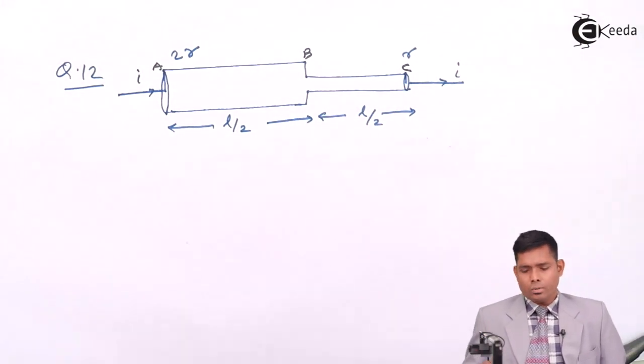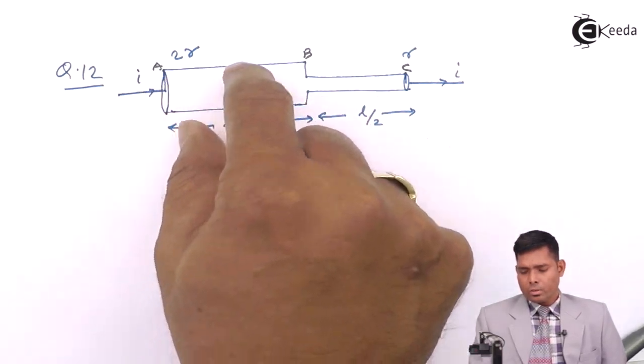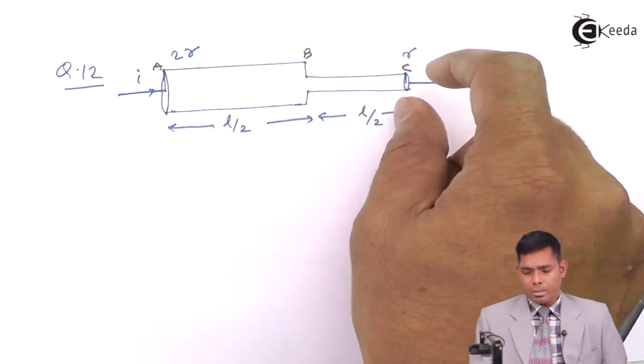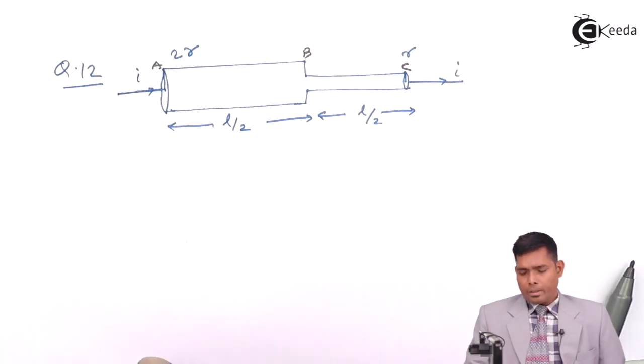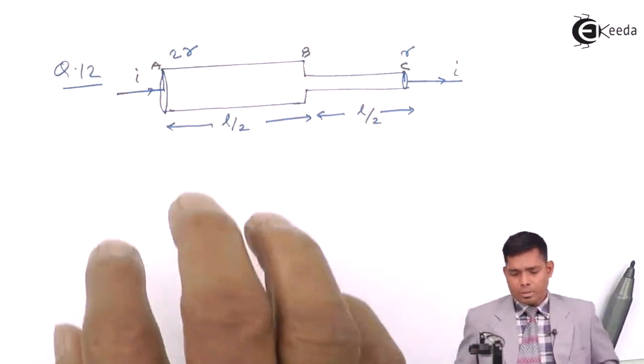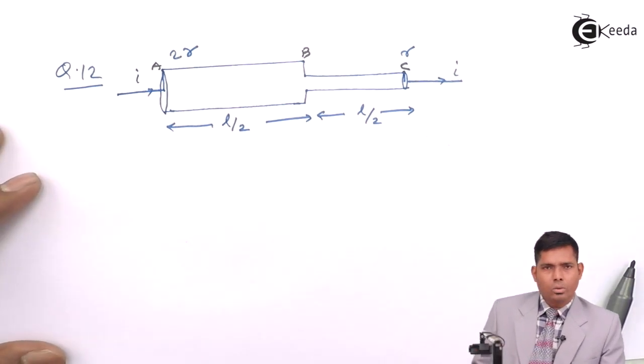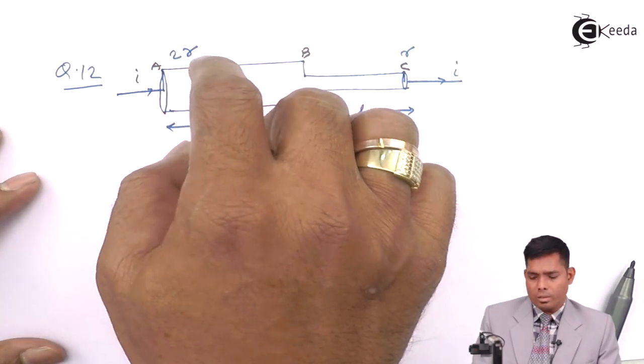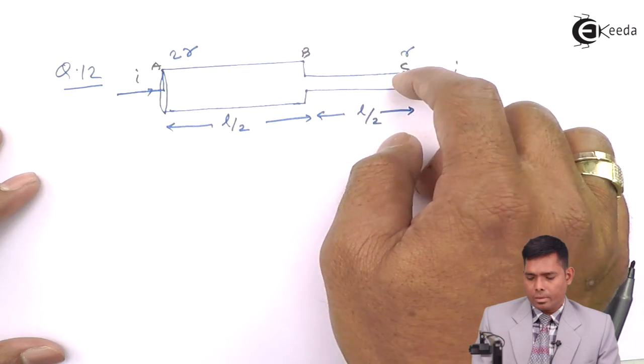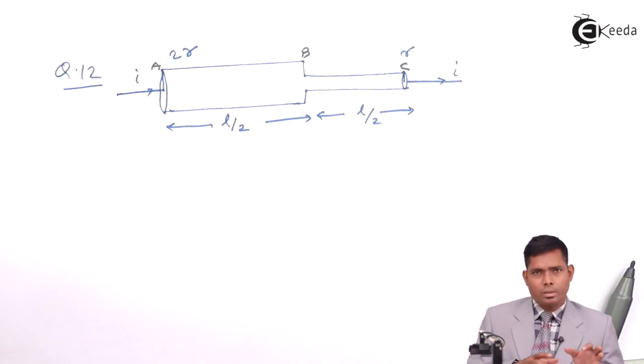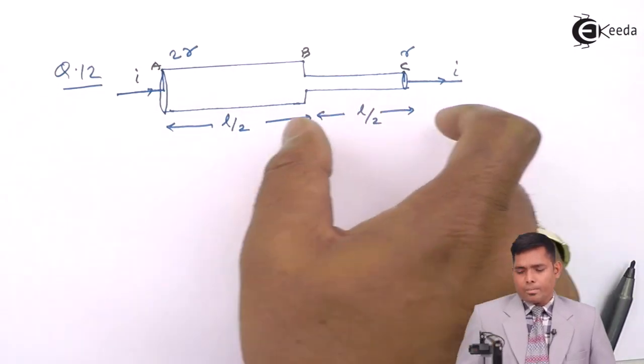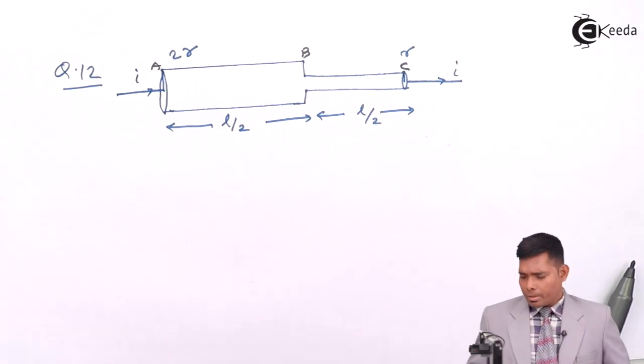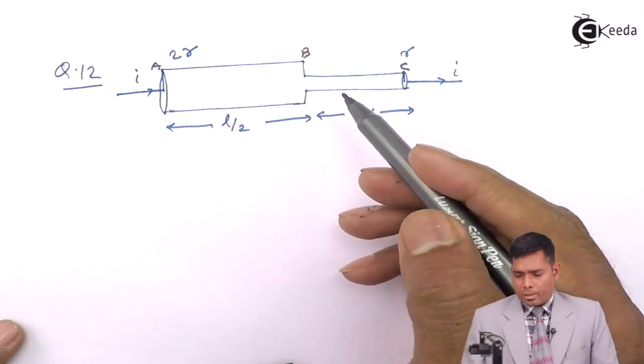So a steady current is going through this cylindrical section. You can see that it's a variable diameter. The first cylinder, this part is AB, the radius is 2R, and here the radius is R. So this radius is smaller - this is double that one. The length is same and they are of same material.